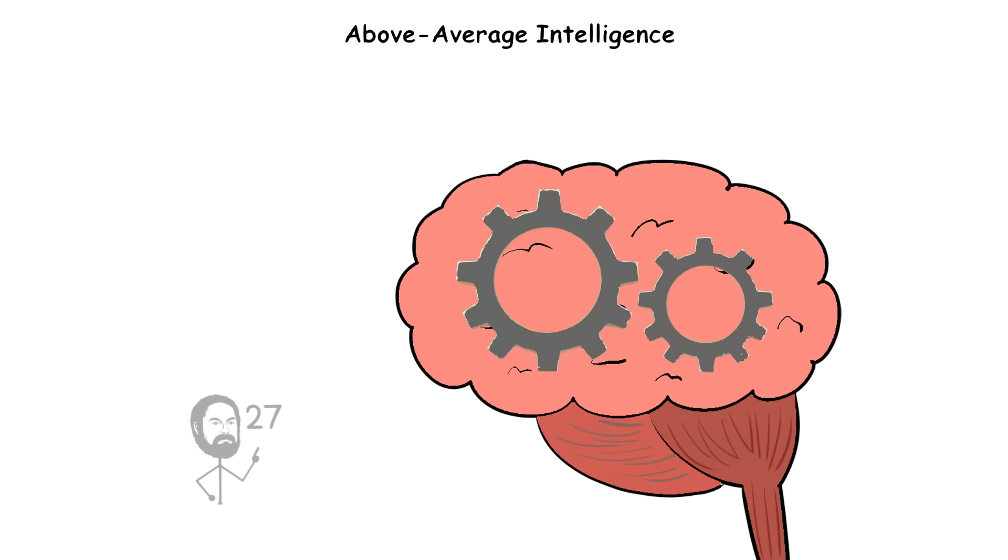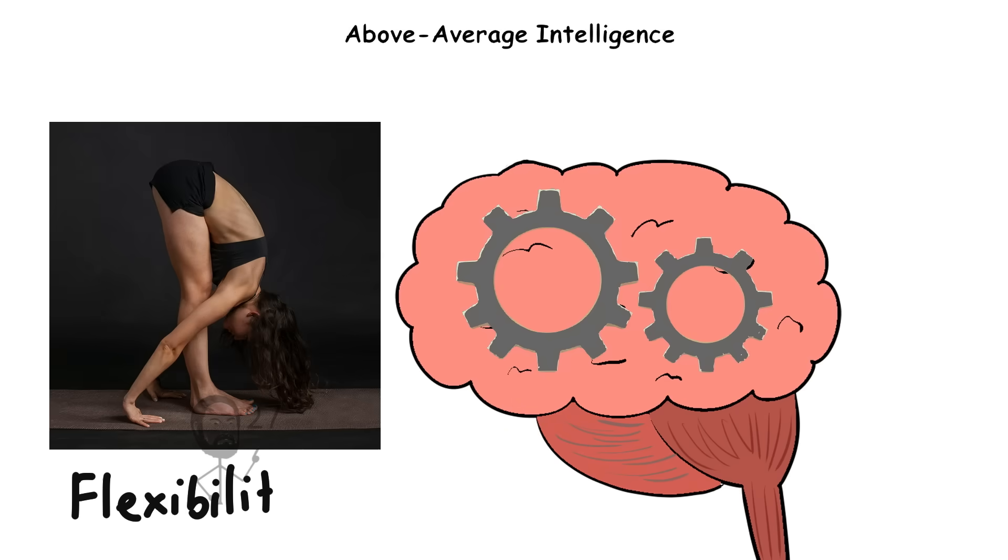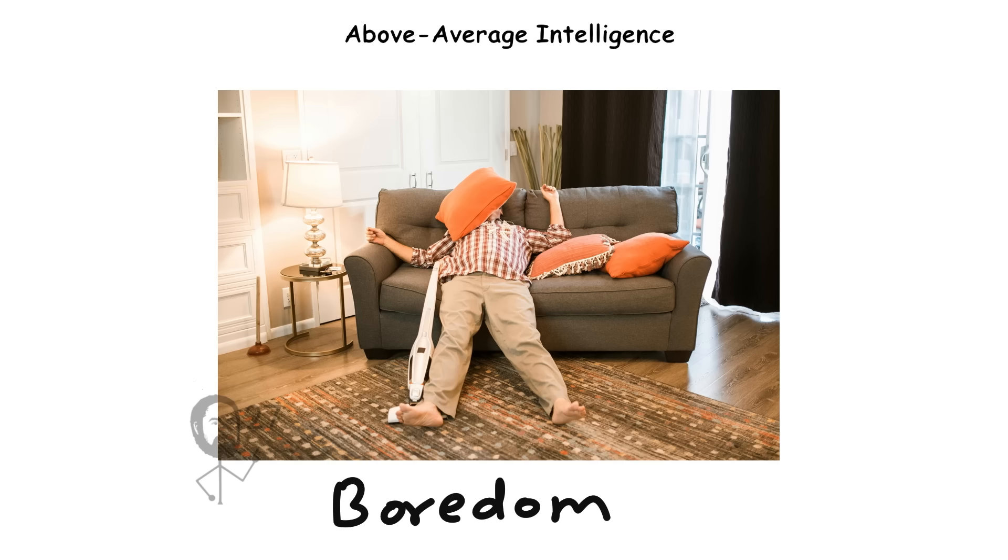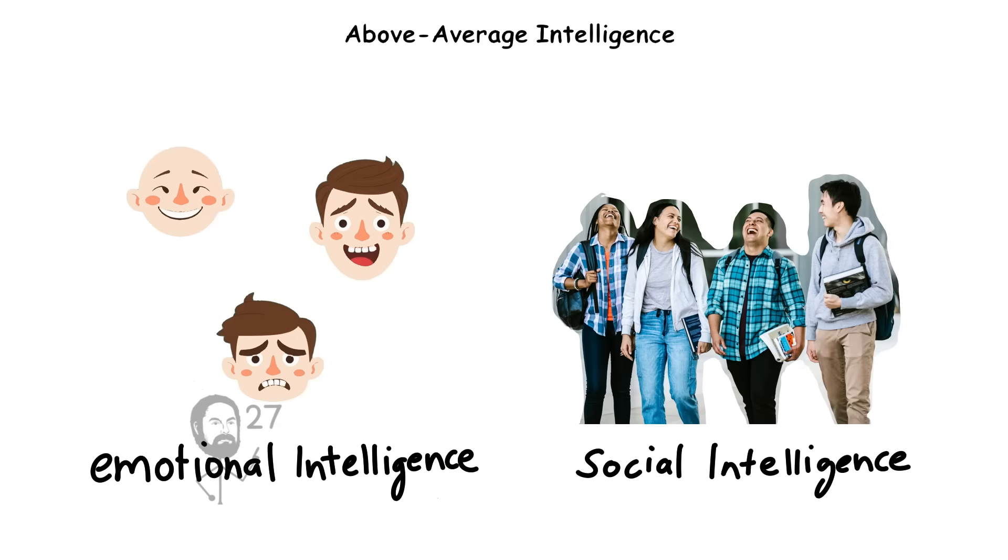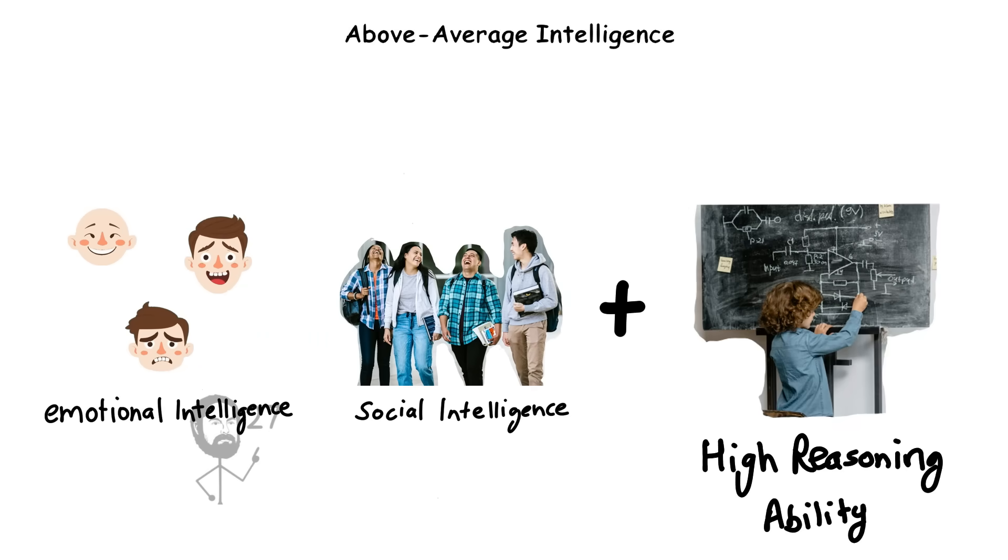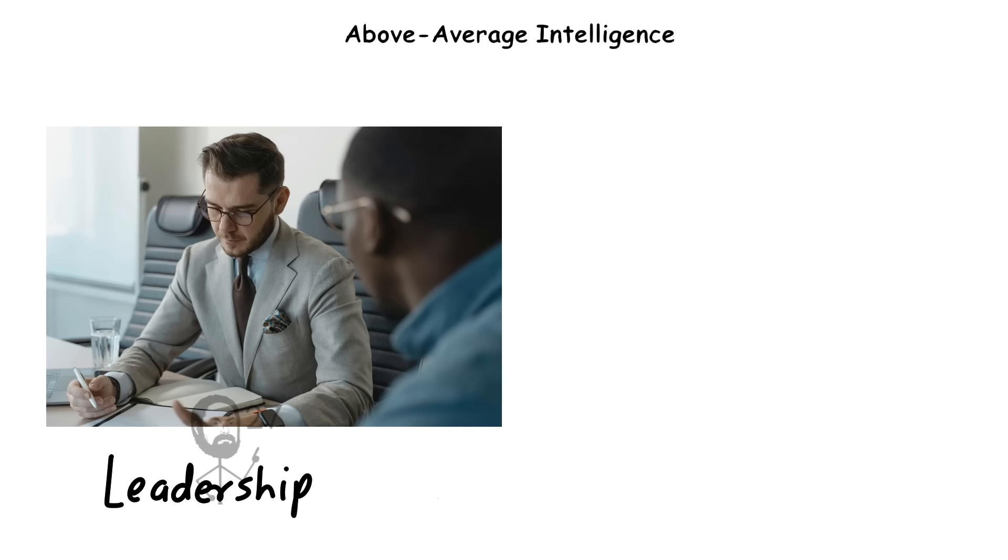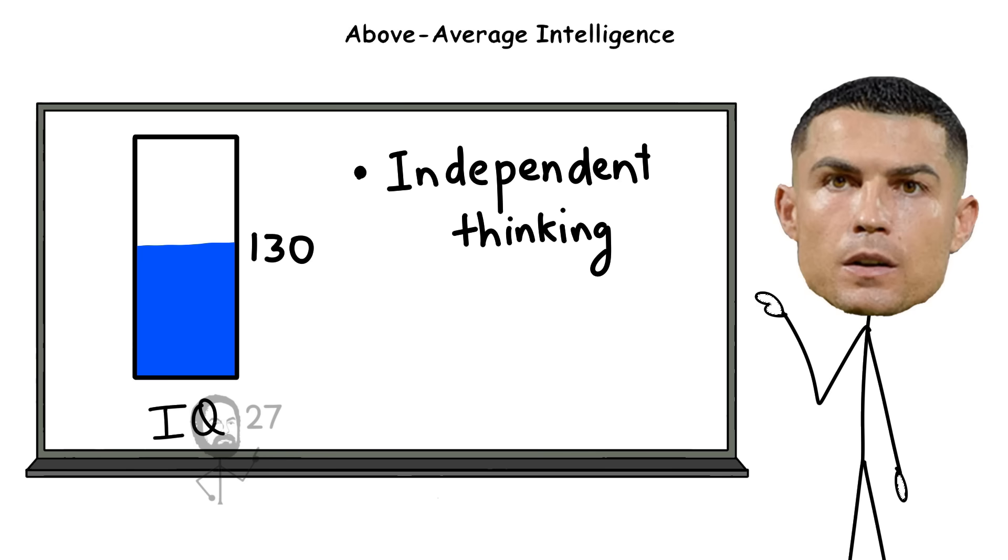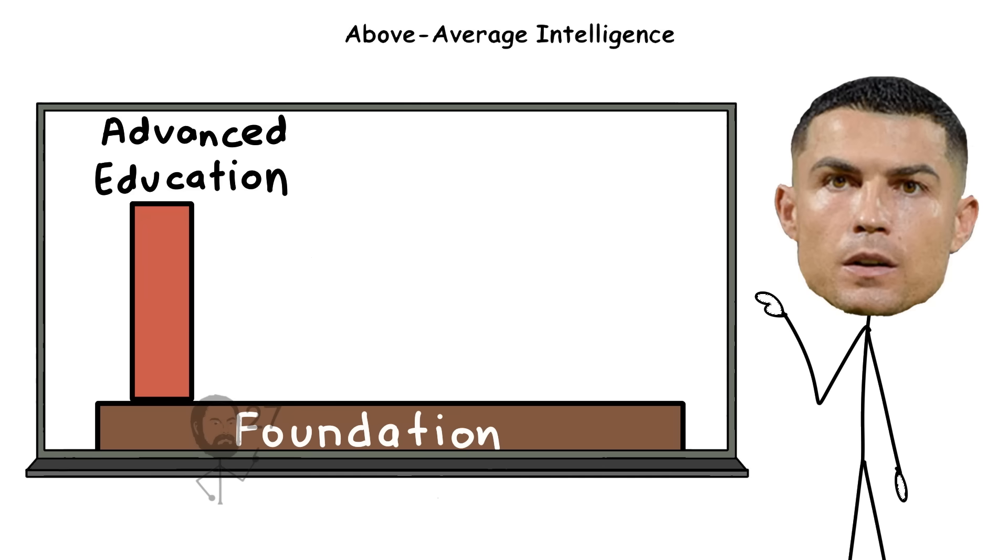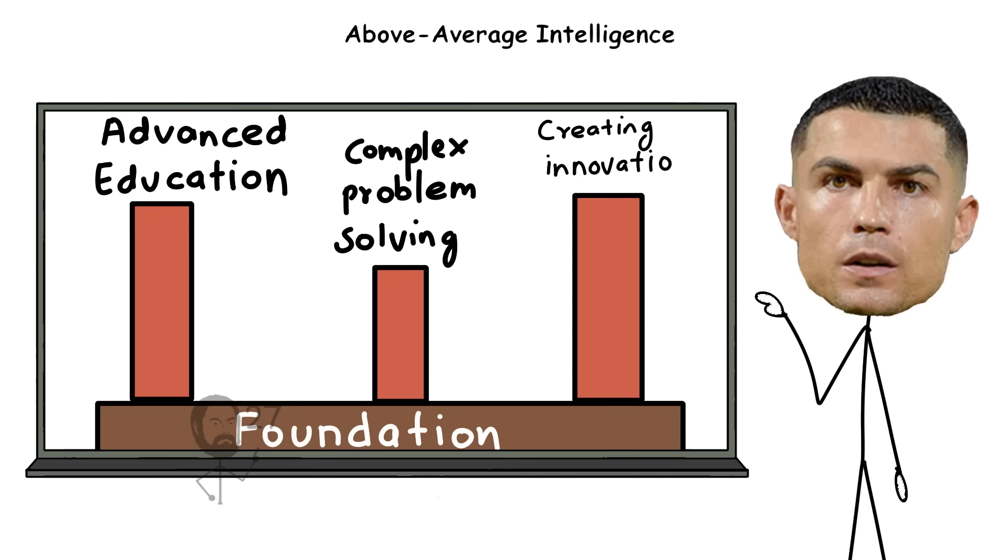While their cognitive advantage offers flexibility, it can also come with challenges such as boredom in routine environments or frustration with slower-paced instruction. Emotional and social intelligence varies, but when combined with high reasoning ability, it often results in excellent leadership and communication skills. This level of intelligence supports both independent thinking and adaptability, forming the foundation for advanced education, complex problem-solving, and creative innovation across nearly every field.